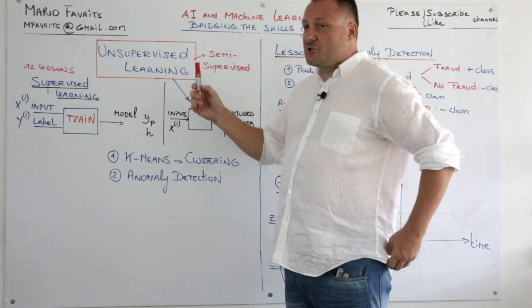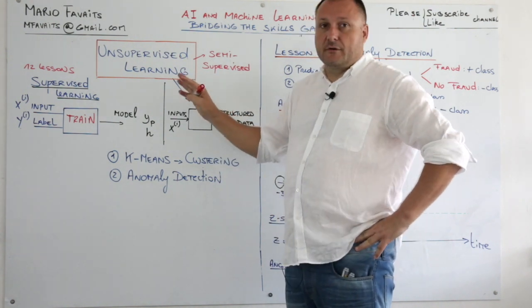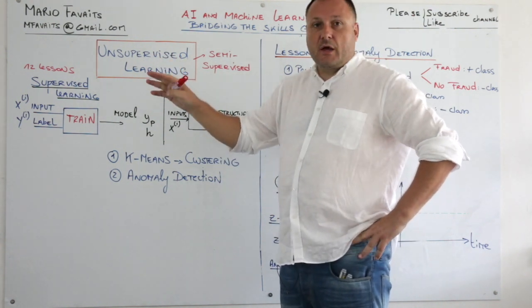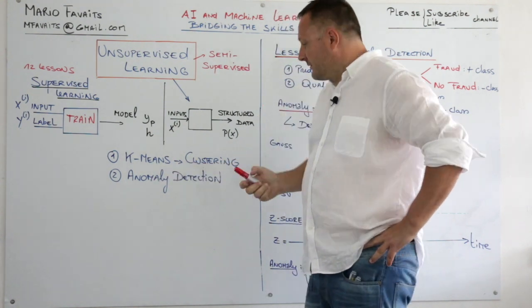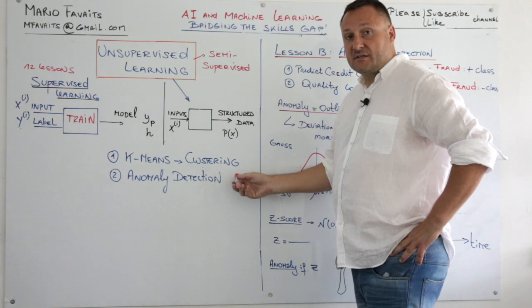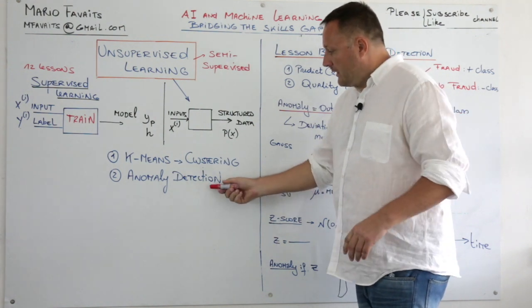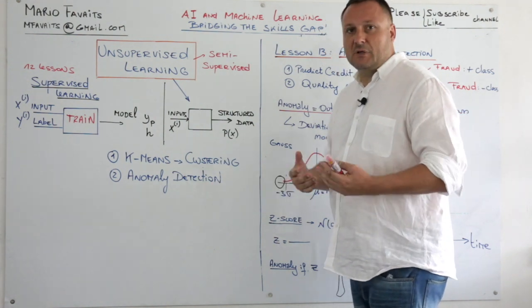All right, welcome to chapter 2, unsupervised learning. This chapter will be rather short because we're going to mainly discuss two algorithms. One is k-means clustering algorithm and the second one is anomaly detection.